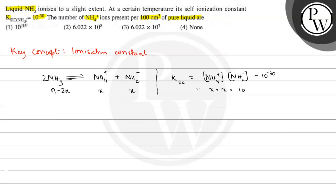So x squared is equal to 10 raised to the power minus 30. Therefore x will be the square root of 10 raised to the power minus 30, which equals 10 raised to the power minus 15 moles per liter — that is, 10 raised to the power minus 15 molar. This is the concentration of NH4+.